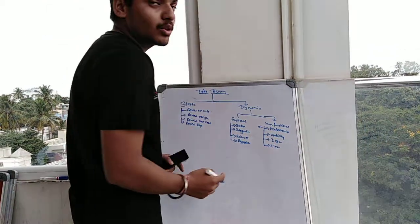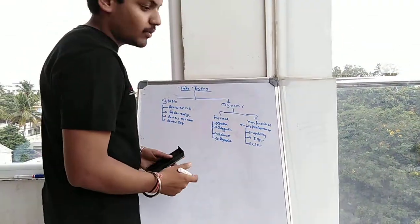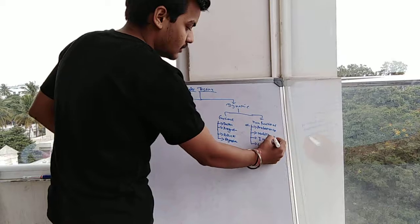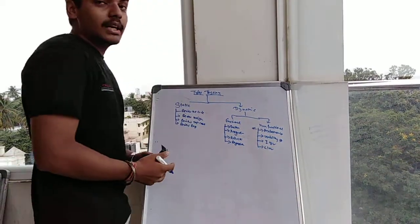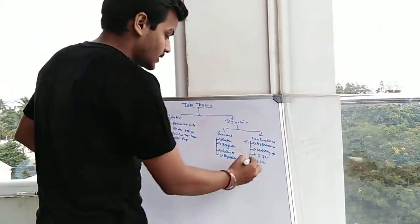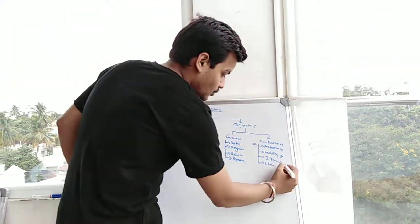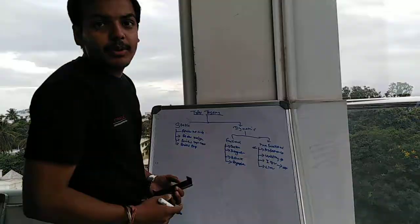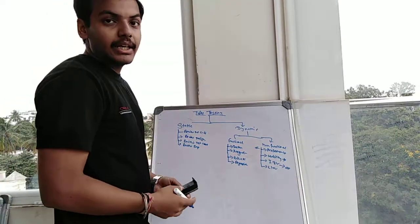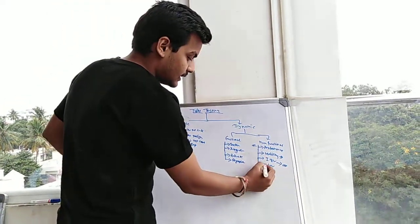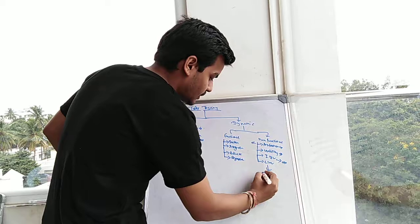We check the performance of the application according to user requirements. In usability testing, we check each and every feature of an application. In accessibility testing, we check our application should work for blind people or physically disabled people.